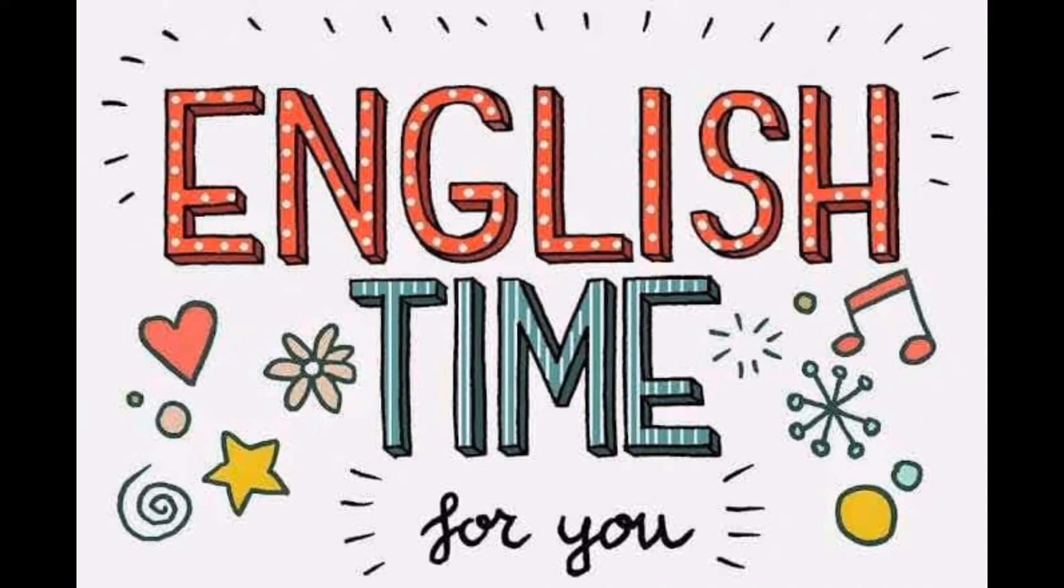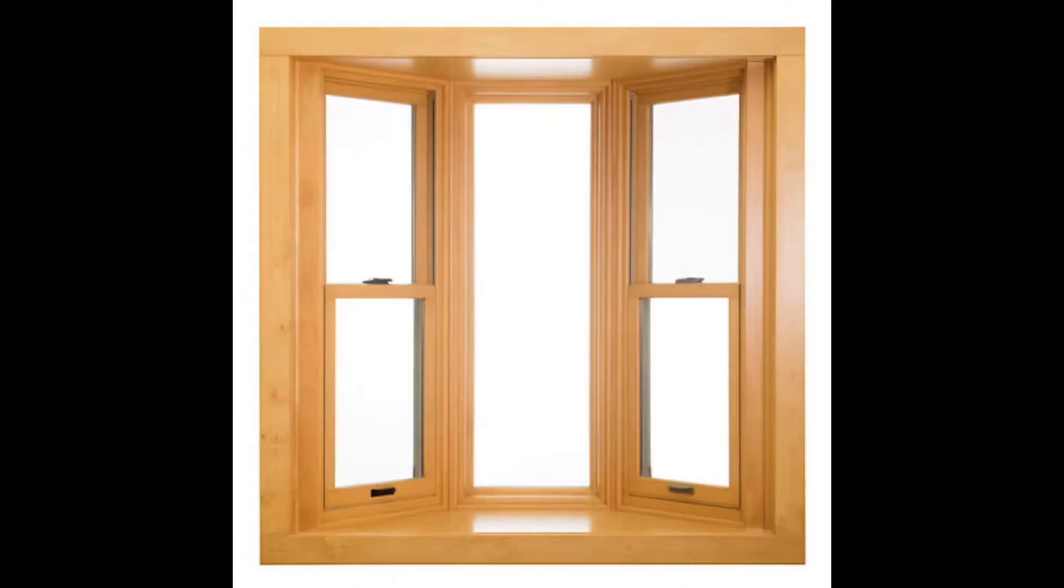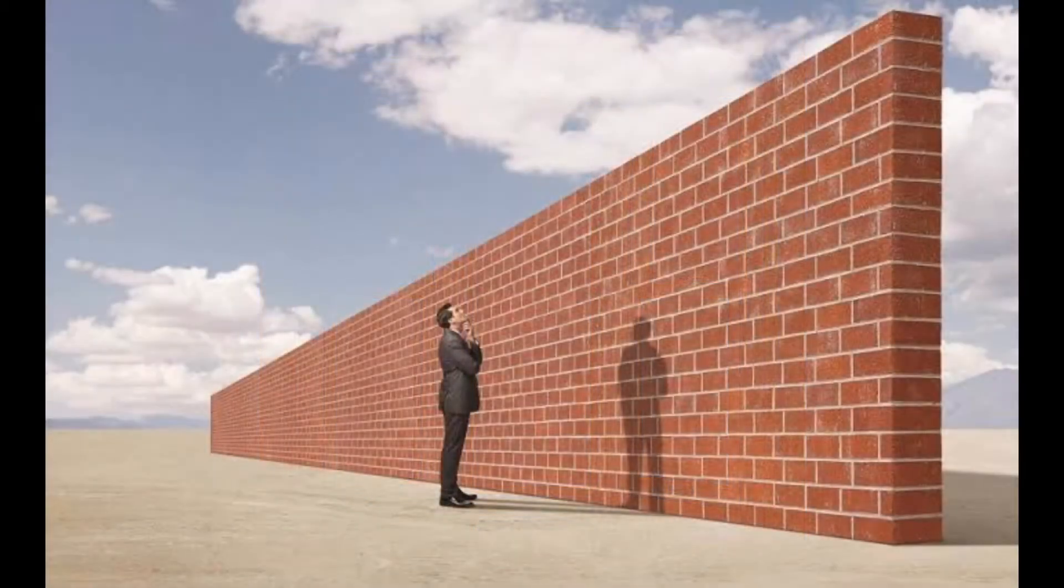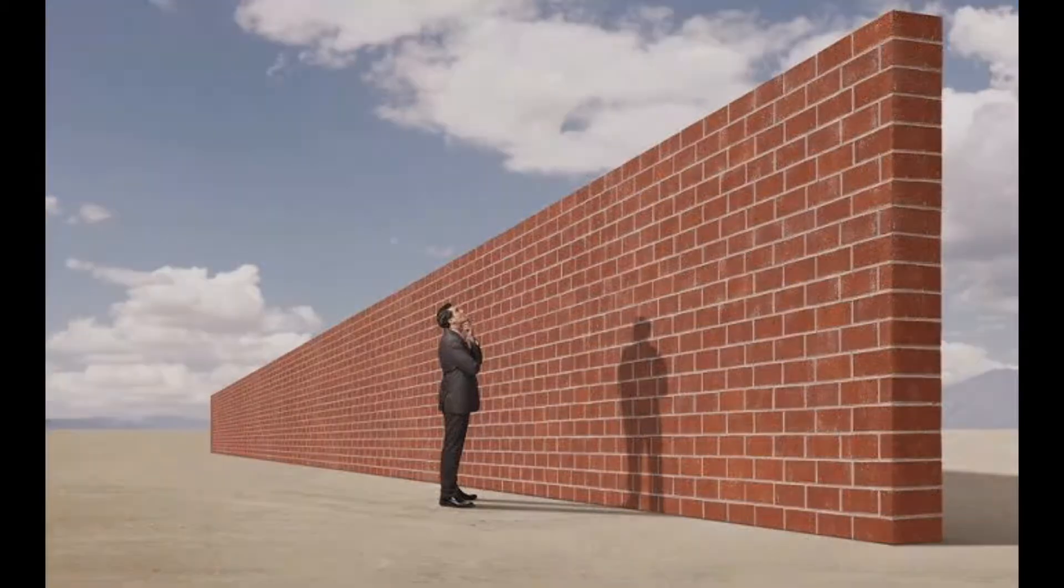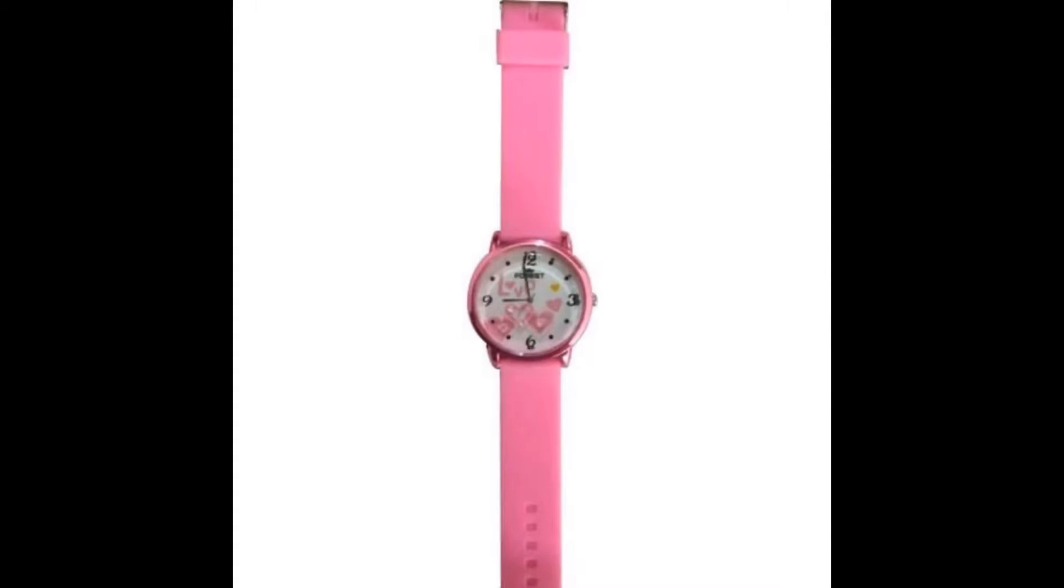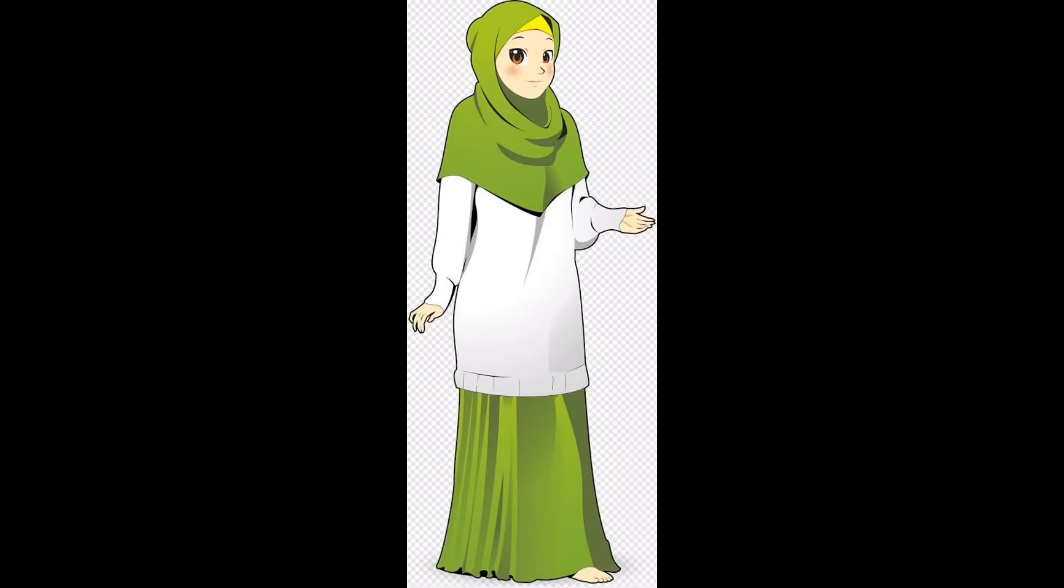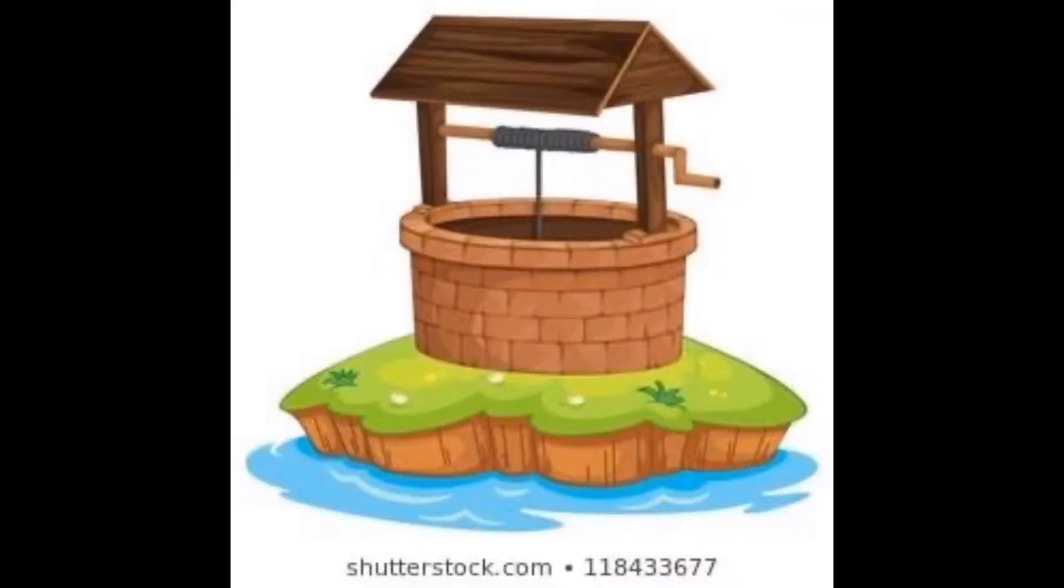This is our English time. Yes, this is a window. We open our window to get fresh air from outside. Wall, it is made up of bricks. It protects our houses. This is watch. Watch tells us time. Women, women is like your mommy and your grandmother, your teacher. Like these are women.